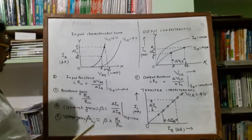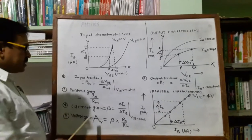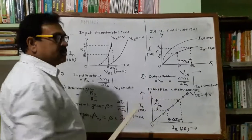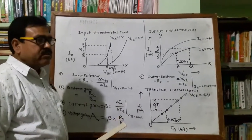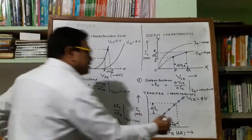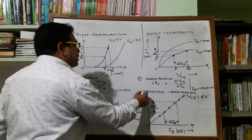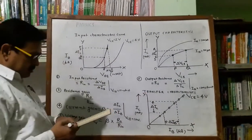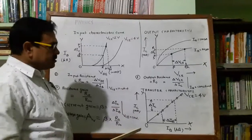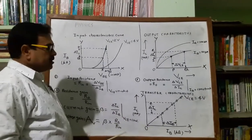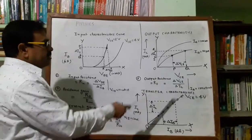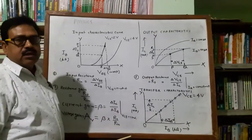The third point is to calculate the current gain and voltage gain. This can be easily calculated with the help of transfer characteristics — the third category of characteristics for PNP and NPN transistors. In the transfer characteristics, base current is taken along the x-axis and collector current is taken along the y-axis. By finding out the values of the base current and collector current, we locate different points and by joining them from the origin, we get a straight line.